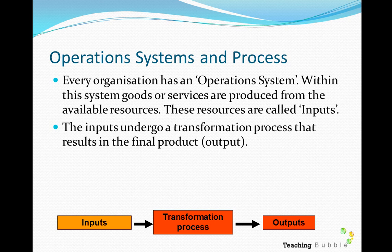Whether it is to produce a good or a service, organizations go through a series of processes to produce that. The resources begin as what we call inputs, and the inputs undergo transformational processes — any kind of process that transforms those inputs into an actual output. The output is the final product.